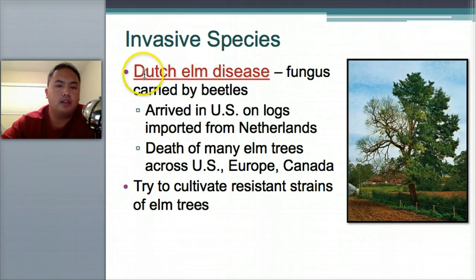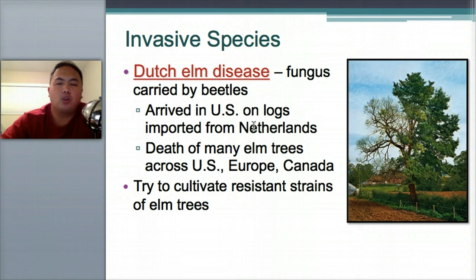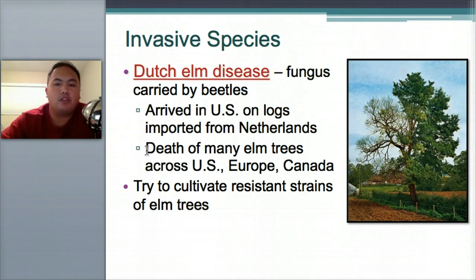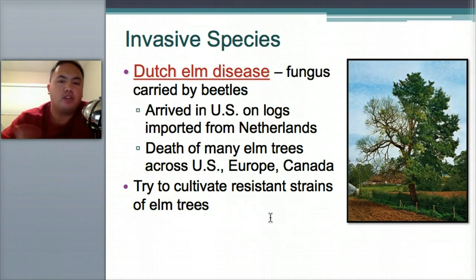Another example is Dutch elm disease — a fungus carried by beetles that arrived in the United States on logs imported from the Netherlands. When brought over, all the elm trees eventually died. They tried to cultivate elm trees immune to it and grow more, but they didn't grow fast enough to replace those dying.